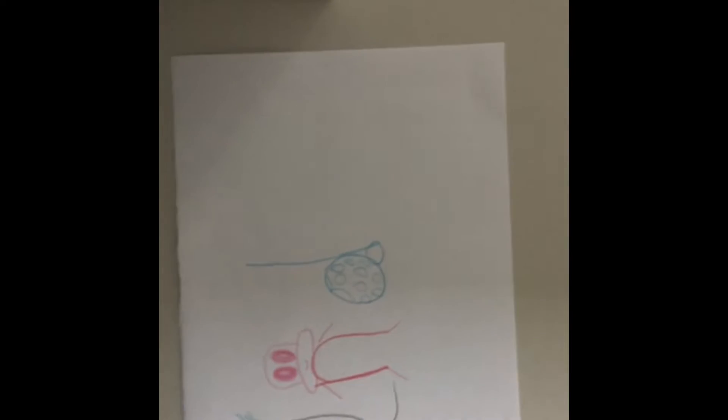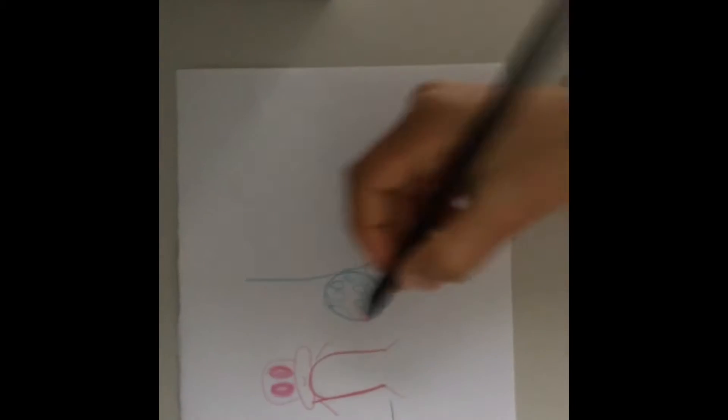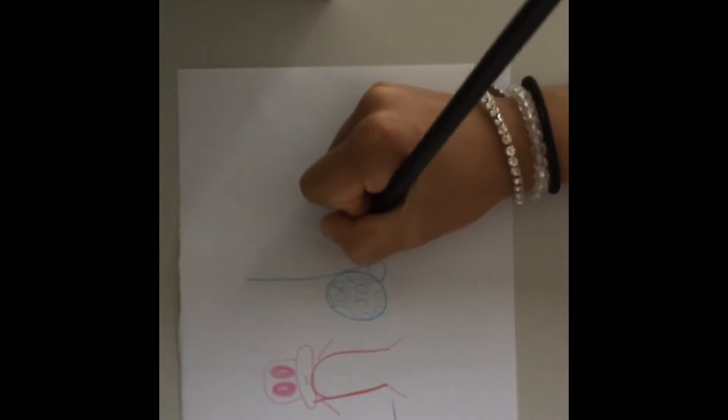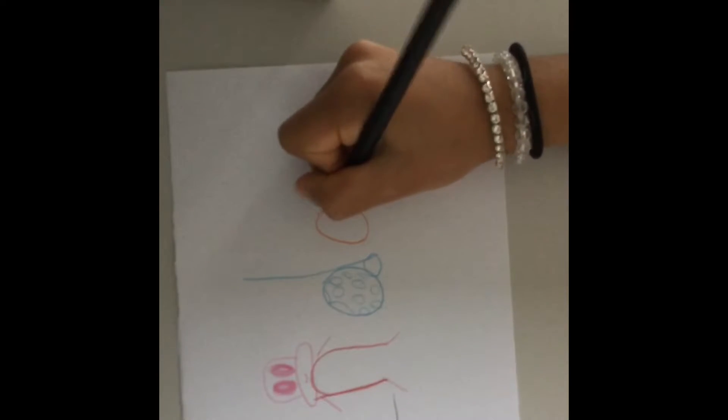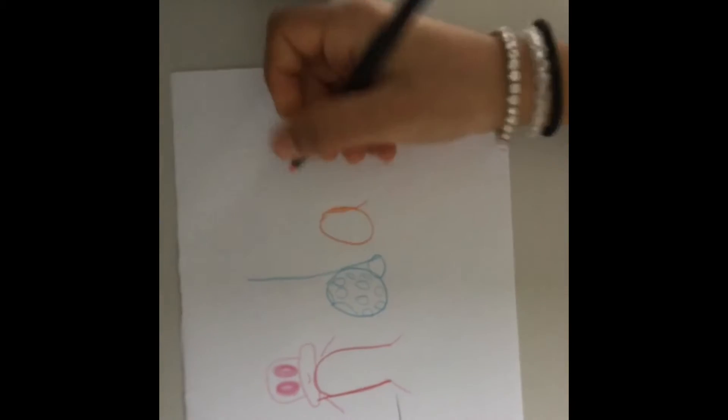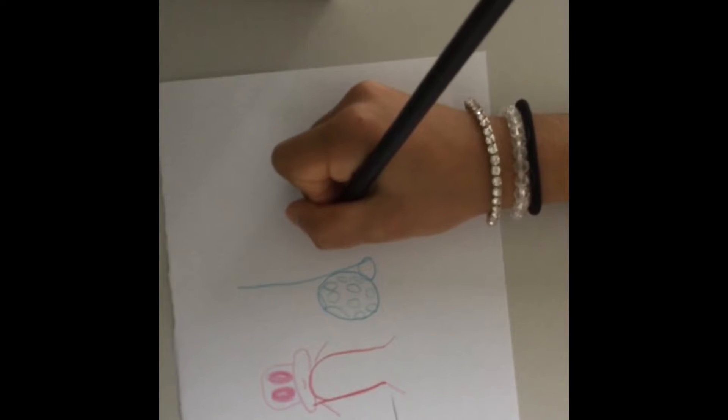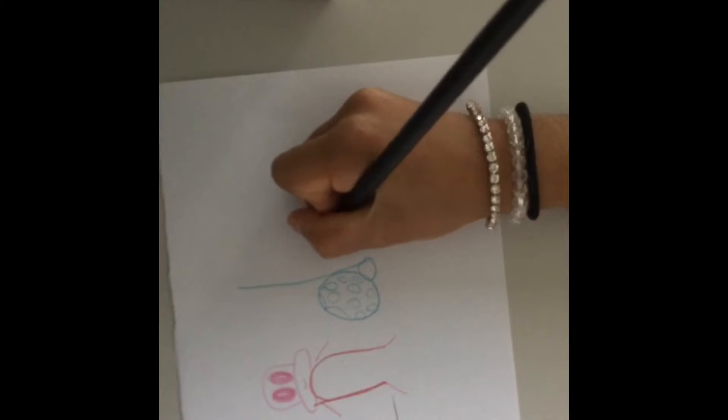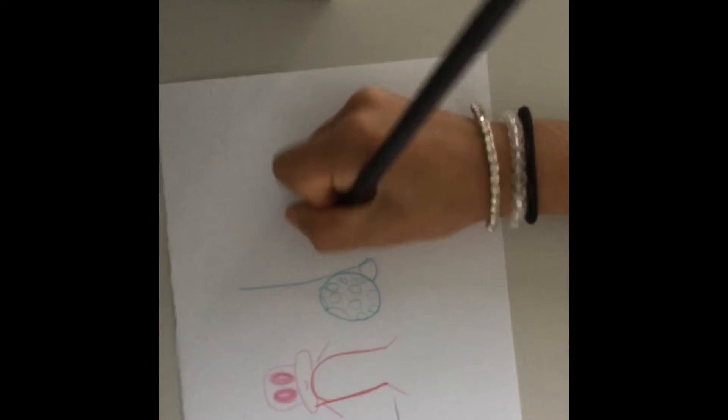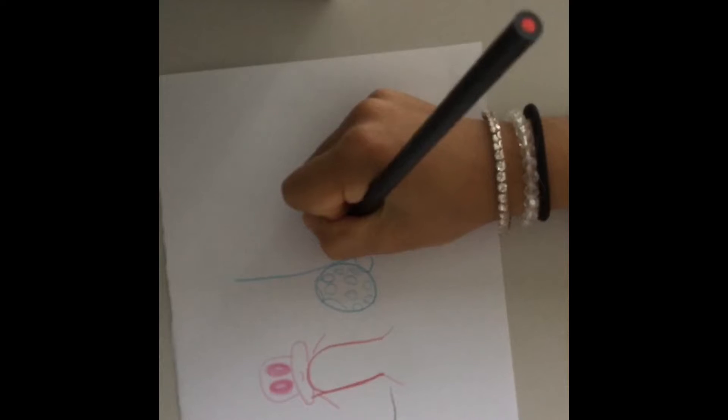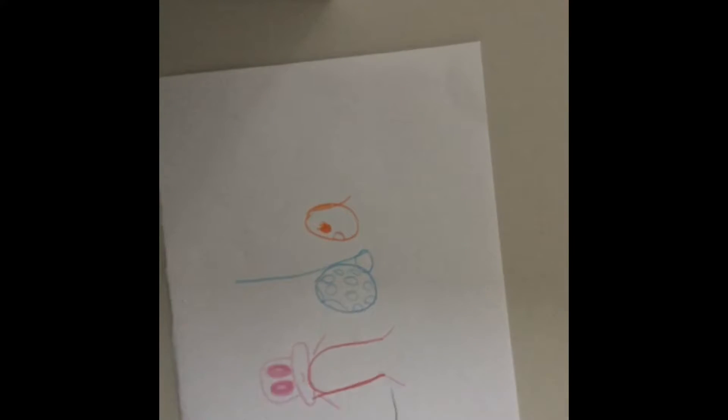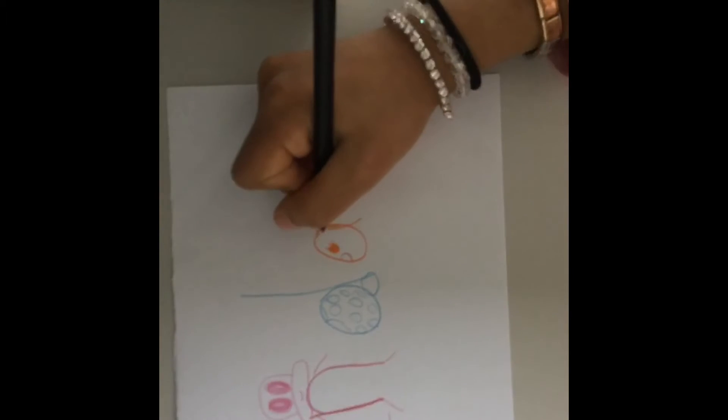And then take the color orange and draw an A. Add eyes, the color red for a mouth, and hair.